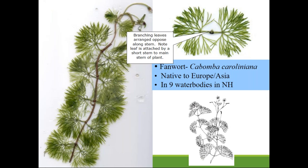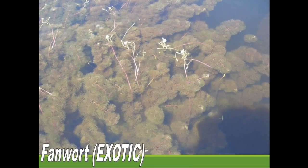Fanwort is a high risk for lakes along the very southern border of New Hampshire — we have it in nine water bodies in the Hudson, Derry, Atkinson, and Hampstead area. It looks like milfoil underwater, but when you take it out of the water you can see the leaves are more splitting or branching rather than feather-like, and they're opposite on the main stem. Fanwort tends to be very bright green and can grow 8 to 12 feet tall.